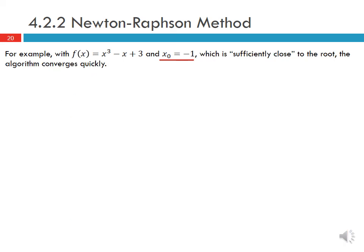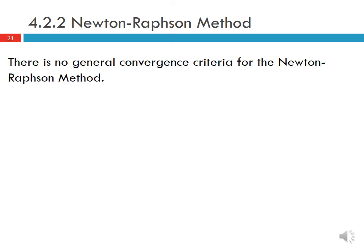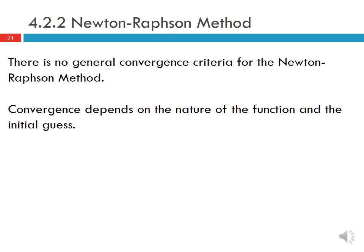With an initial guess of x0 equal to minus 1, which is sufficiently close to the root, the algorithm converges very quickly — after only six iterations. The relative error decreases rapidly. However, what counts as 'sufficiently close' depends on the shape and behavior of the function, and in general there is no guaranteed convergence criterion for the Newton-Raphson method; convergence depends on the nature of the function and the initial guess.